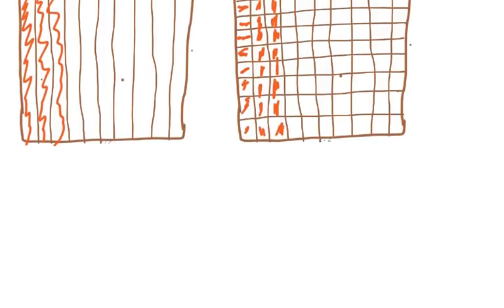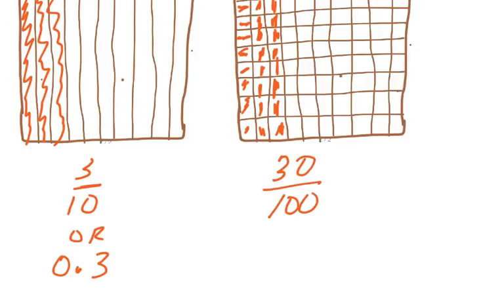Now what I have shaded in here on the left-hand side is three-tenths. On this other side, what I have shaded in is thirty-hundredths or zero decimal three-zero.